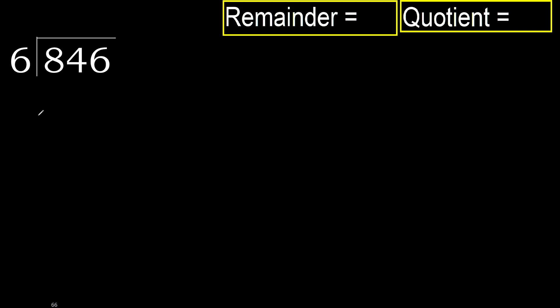846 divided by 6. 8 is not less, therefore start with 8. 6 multiplied by which number is nearest to 8 but not greater? 6 multiplied by 2 is 12, which is greater. Multiplied by 1, 6 is not greater. Subtract: 8 minus 6 equals 2. Next.